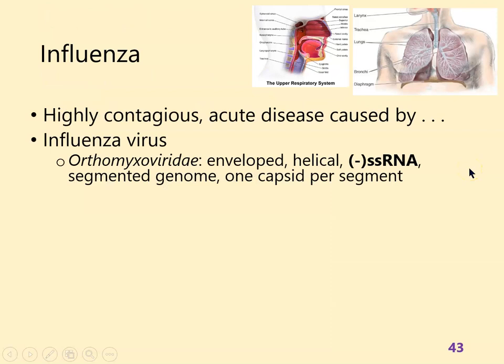Influenza is a disease caused by the influenza virus. It's contagious and acute, and it does spread in outbreaks. Each different government has its own way of defining what an epidemic is — sometimes there are epidemics, sometimes there aren't. It's a member of the orthomyxoviridae family. It is enveloped, helical, and has a negative-sense single-stranded RNA genome. It also has a segmented genome — there are eight genome segments, and each one has its own capsid.